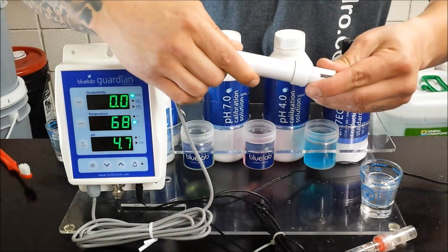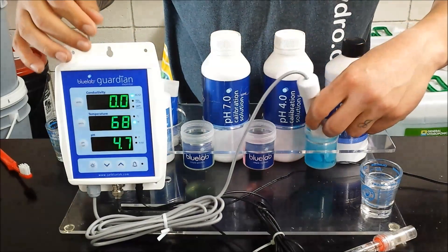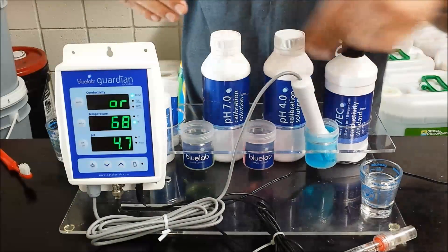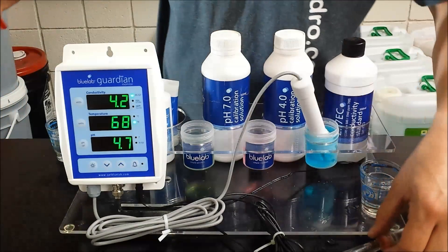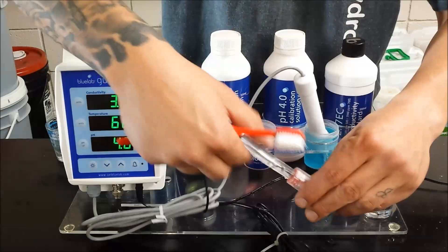Put the shroud back on and this is your temperature compensation so you want to have it in a liquid that's been out in the same temperature as your pH calibration. Always use fresh solution.